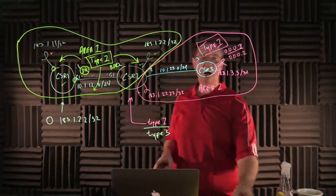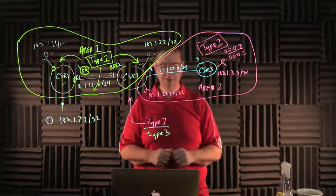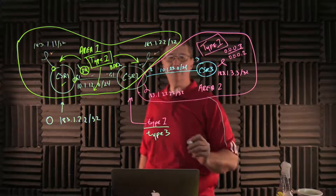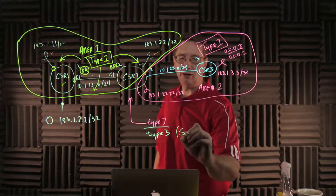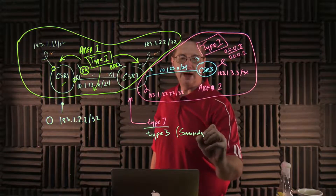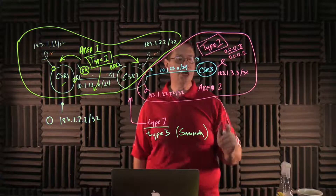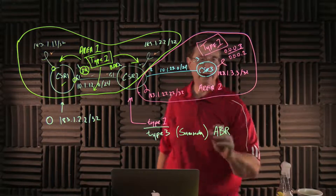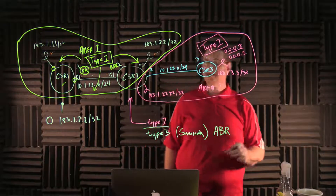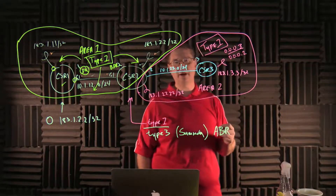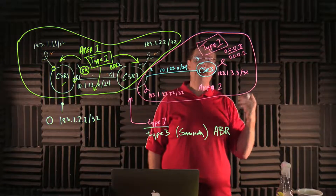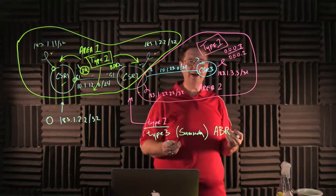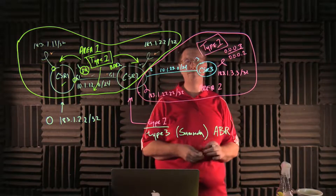The time has come to talk about the missing piece of the equation, and it all revolves around Type 3 LSAs, which we refer to as summary LSAs. A summary LSA is generated by something called an ABR, an area border router. Per Cisco's definition, an area border router is a router that has interfaces in more than one area, and one of those areas must be area zero.